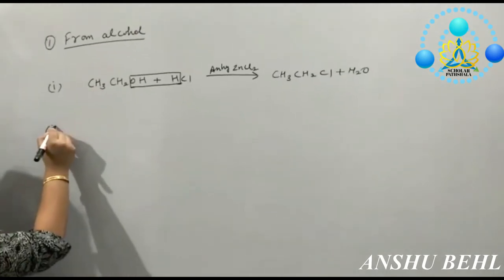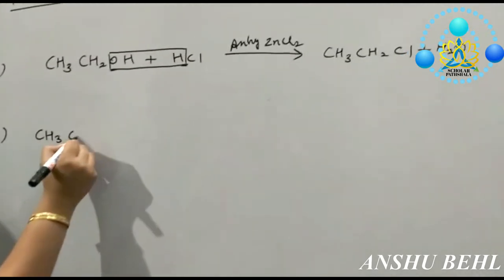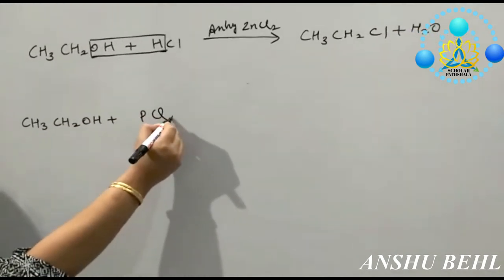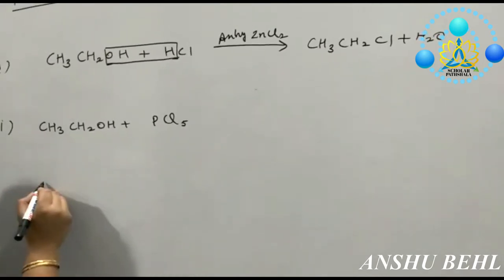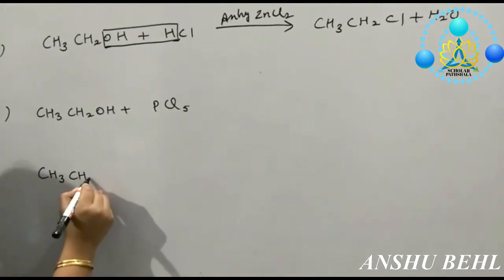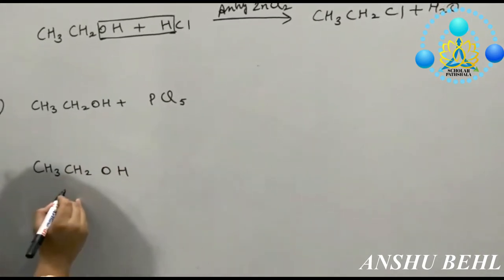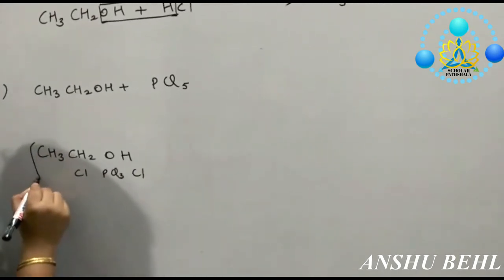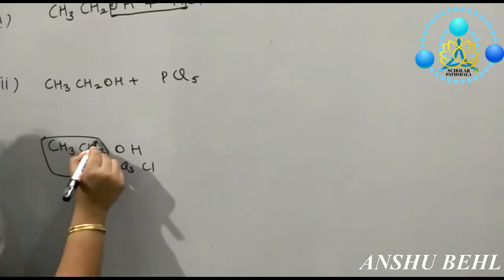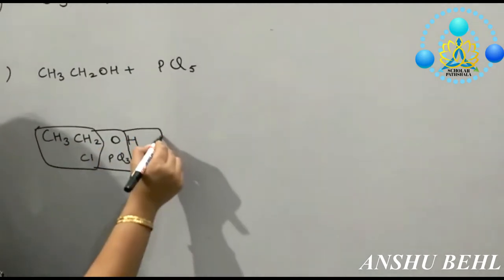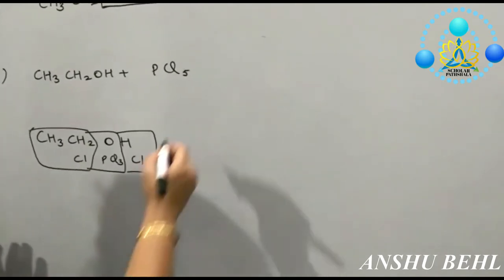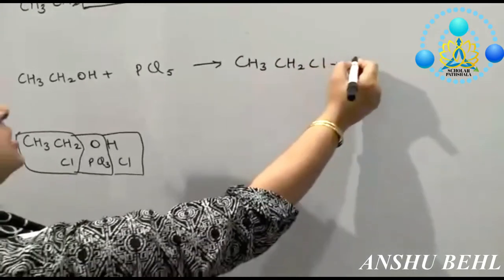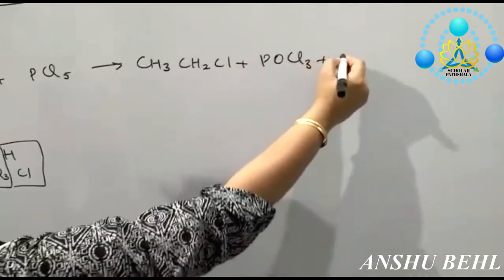This conversion is done in the presence of anhydrous zinc chloride as catalyst. The second reaction is to take ethanol and react it with PCl5. Split PCl5 as Cl–PCl3 and Cl. The product is CH3–CH2–Cl (ethyl chloride), plus POCl3, plus HCl.